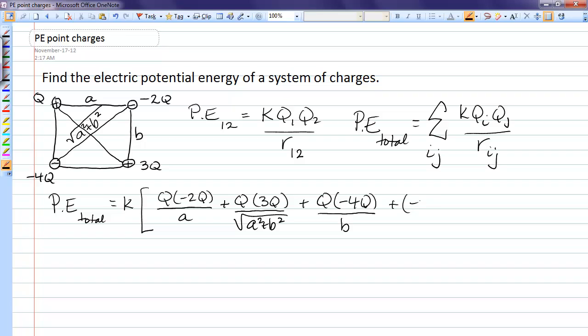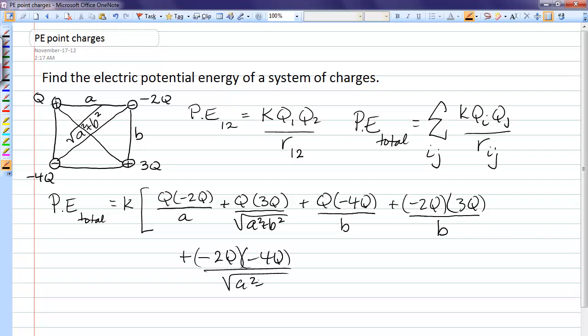I'll now pair negative 2Q with 3Q. The distance between those is B. And finally pairing 3Q with negative 4Q, and the distance between those is A. So there are our six terms with the six lines in the diagram.